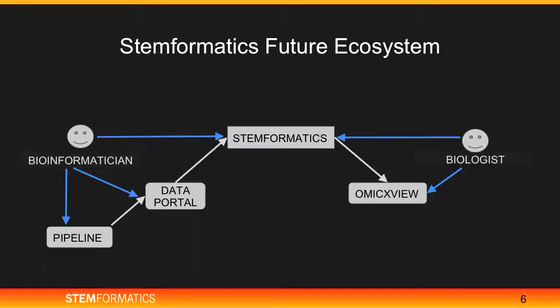This is what our ecosystem would look like in the future. All the rectangular boxes are our components. Number one is the pipeline — a workflow that processes the raw data. We get data from a biological experiment that goes into pipelines, it gets processed, then it goes to a data portal, which is a data repository that holds all the data including the flat files and the database data. From the data portal, anybody — any bioinformatician, data scientist, or anyone including Stimformatics — can fetch the data.